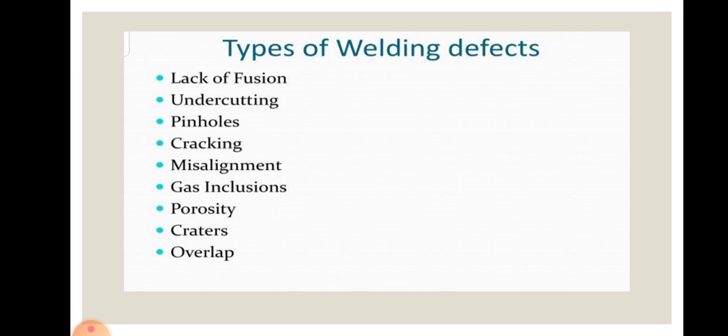There are different types of welding defects: lack of fusion, undercutting, pinholes, cracking, misalignment, gas inclusions, porosity, crater, and overlapping, among many others. In the next slides, we will study all of these welding defects in detail with their causes and remedies.